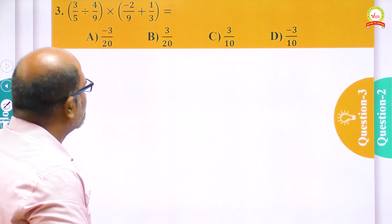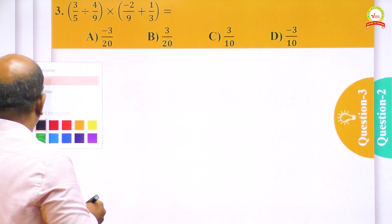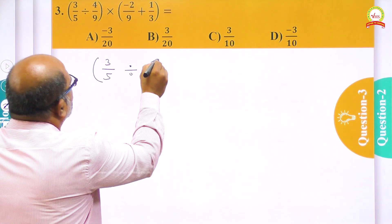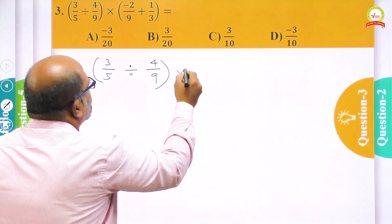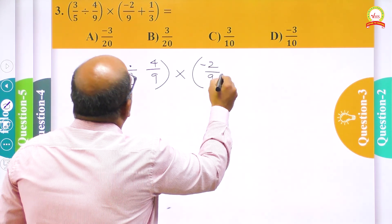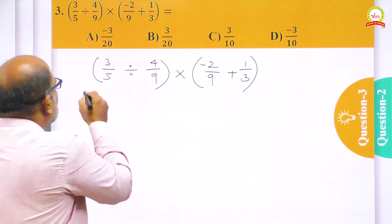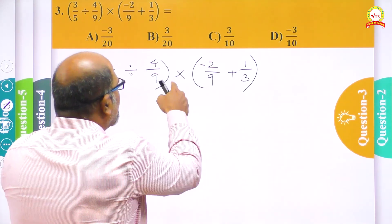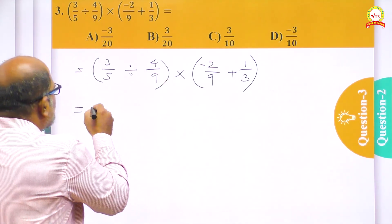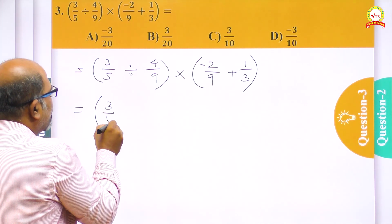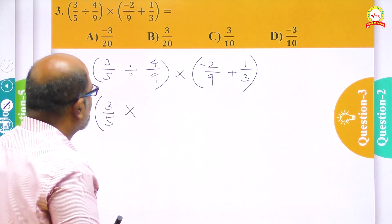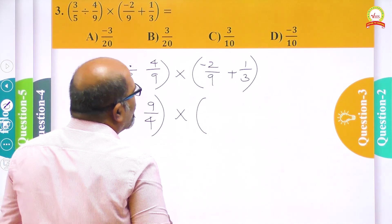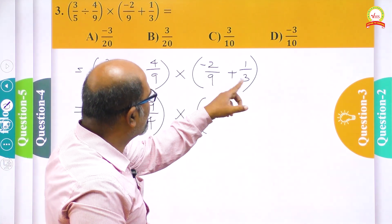This is actually a very simple simplification problem. I take the question as it is given here: 3/5 divided by 4/9 into (minus 2/9 plus 1/3). I will be simplifying the expression contained in the brackets separately and finally I will do the product.